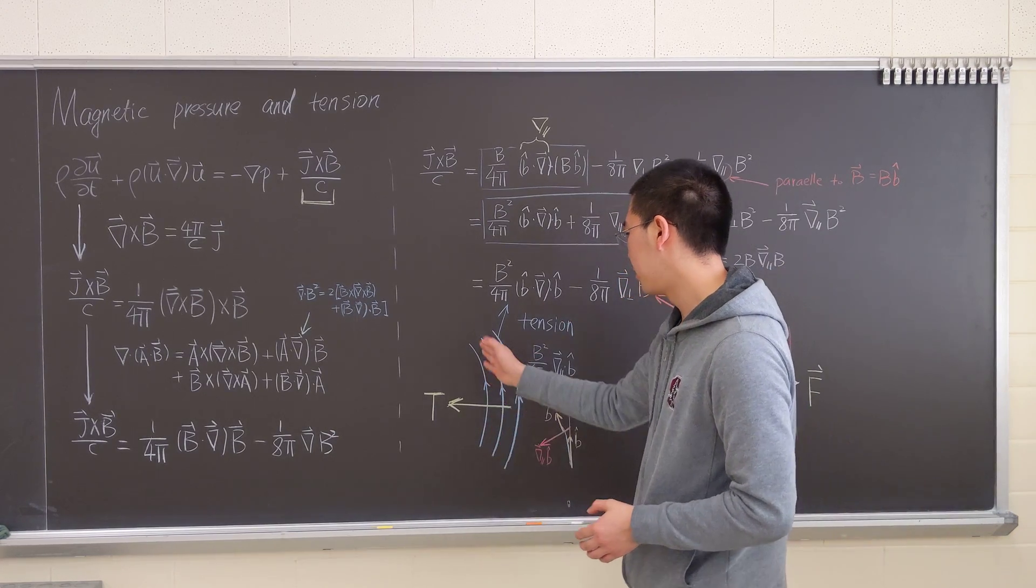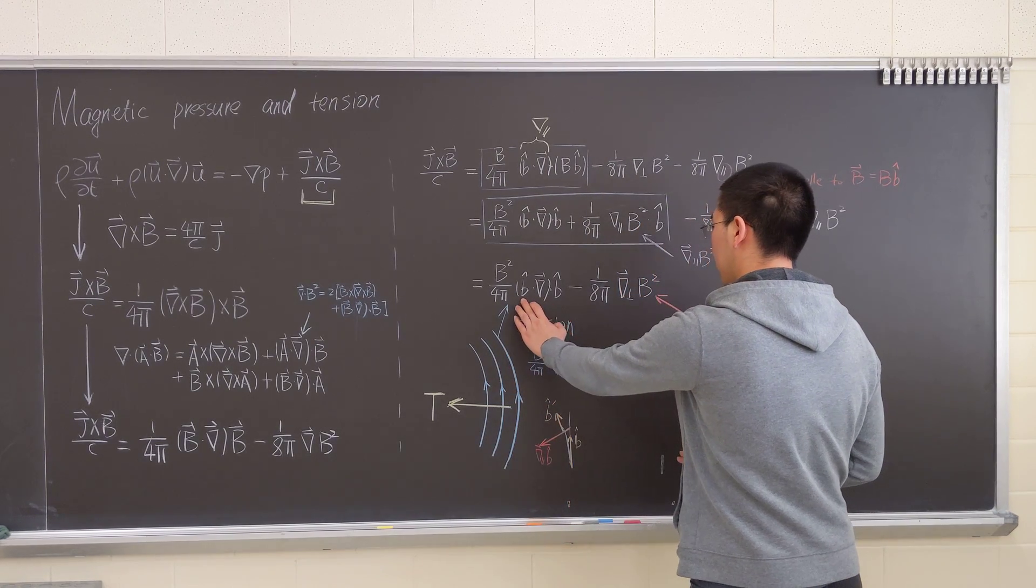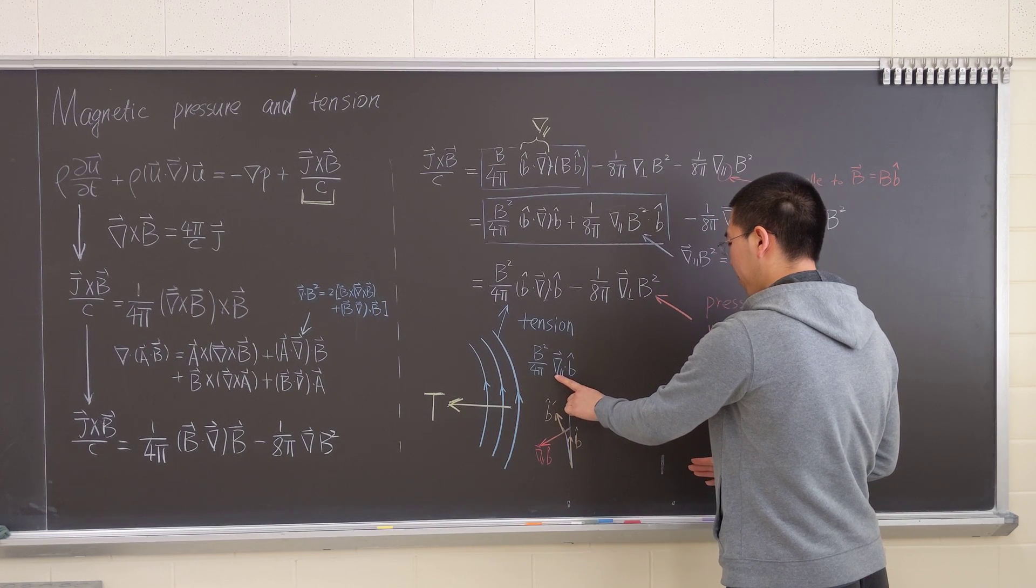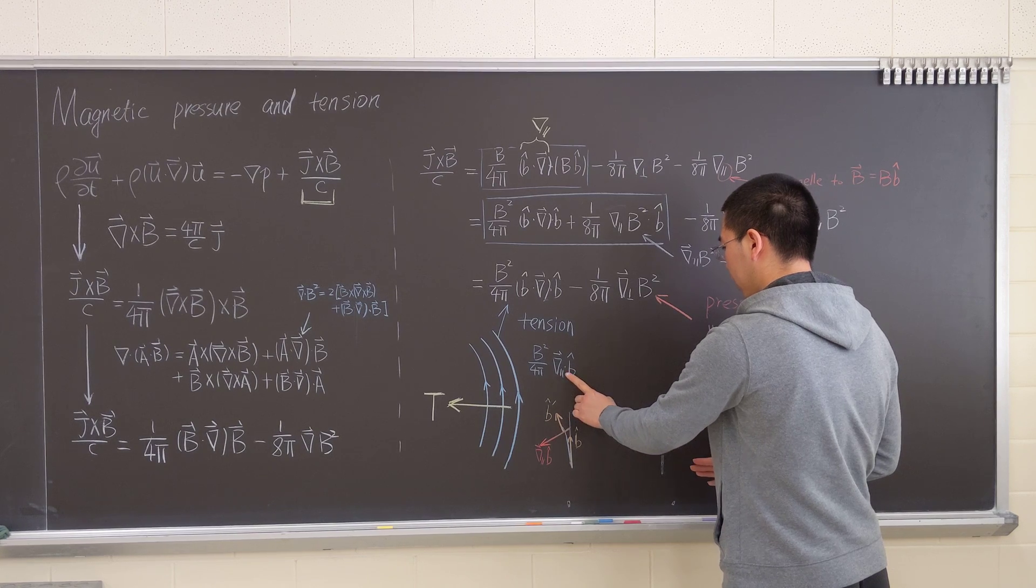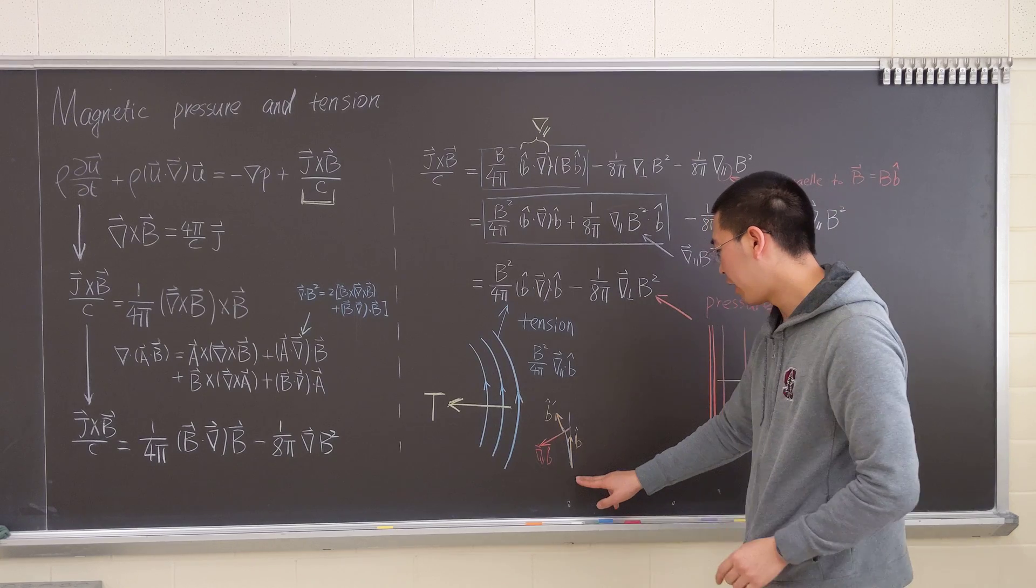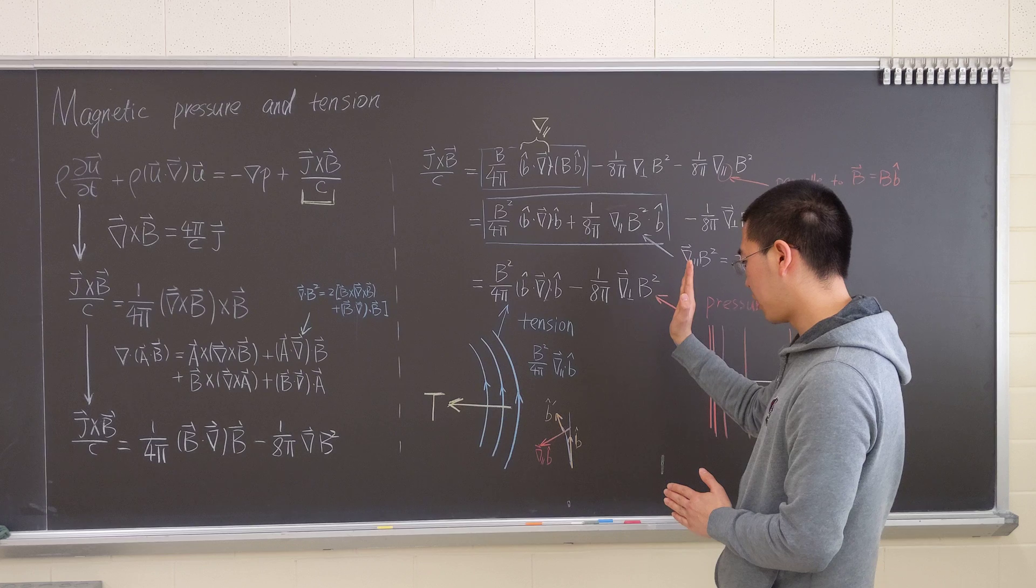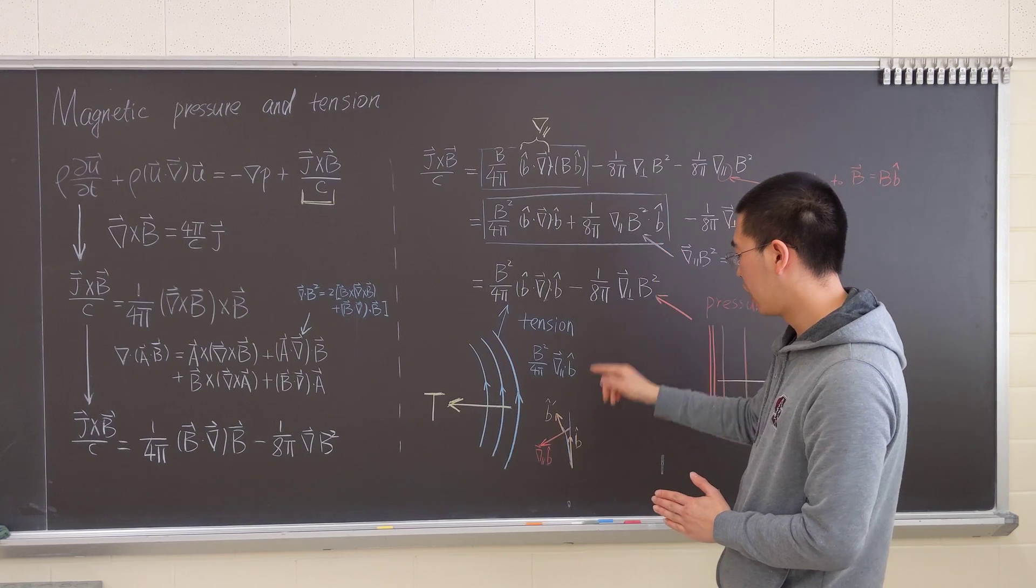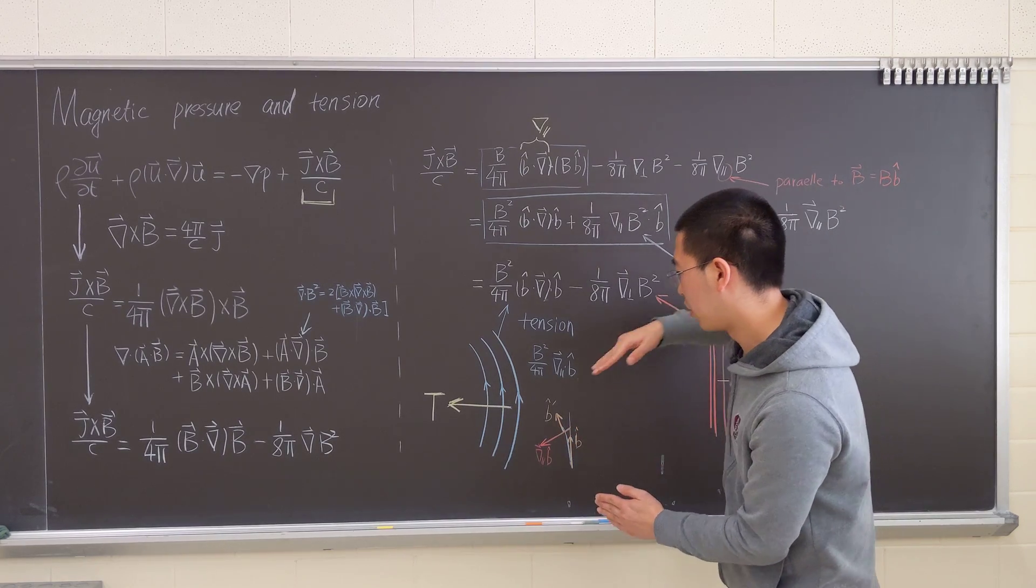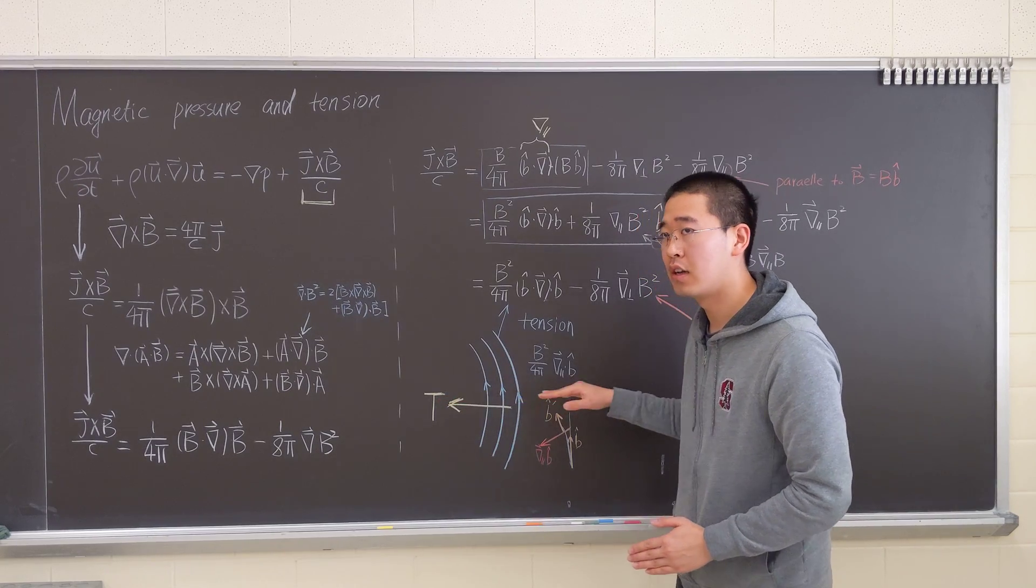If we have some curvature of the magnetic field, then you can see that this term essentially is grad parallel dot B hat. So if you initially have a straight magnetic field going this way, and the next moment it goes a little bit curved that way, then the change will be like to that direction.